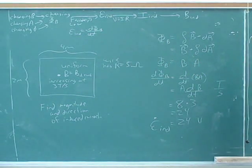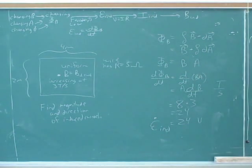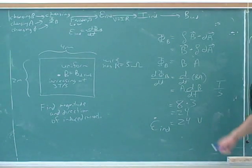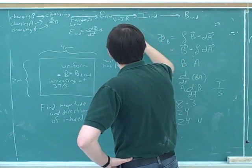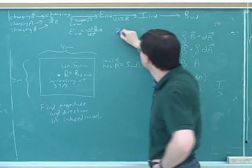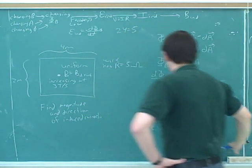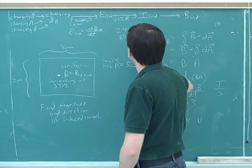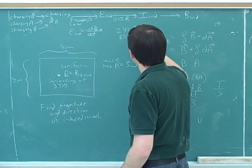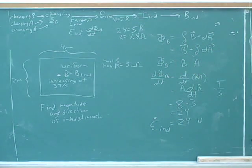All right. Now we found the induced voltage. Now we have to try to find the induced current. Well, if this is the induced voltage, what equation can we use to find the induced current? Ohm's law. Right. So let's work that out. What would we get there? Okay. So it would be the voltage, 24 divided by the resistance, which is 5. Okay. So that would be 4.8. Am I doing that right? All right. I don't think so.